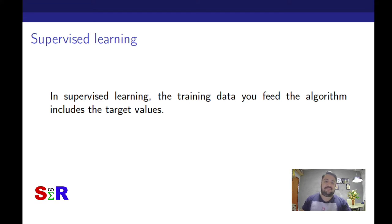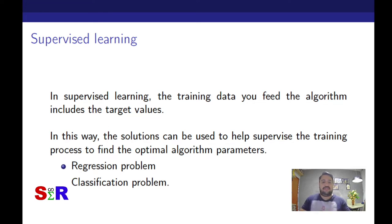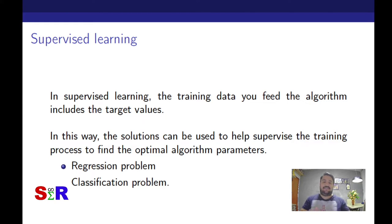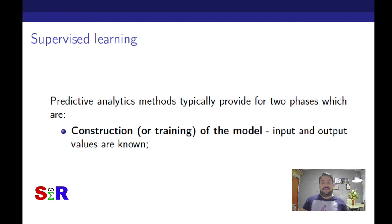Basically, in supervised learning when working with predictive models, we need a dataset comprising a set of observations with input and output values. Depending on the nature of the output values, if they are categorical, we have a classic classification problem; if they are numerical, we have a regression problem. There are numerous types of regression within the regression problem.